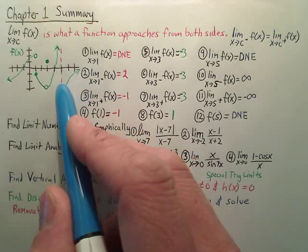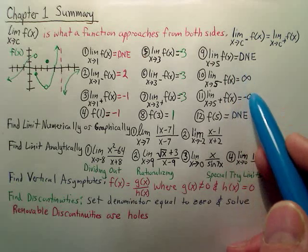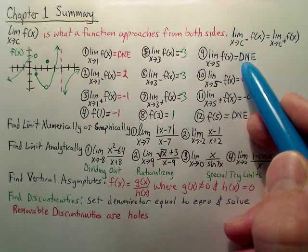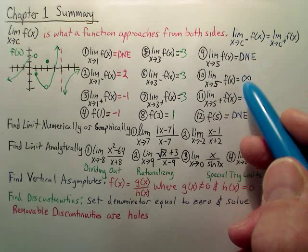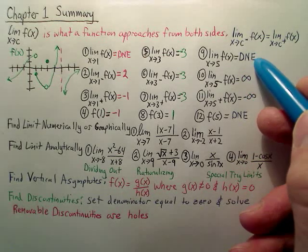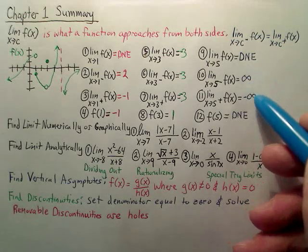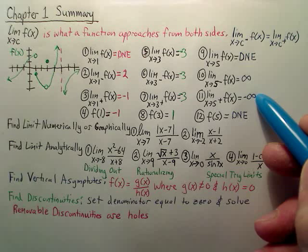From the positive side, aren't you going to negative infinity? These two do not agree, so this does not exist. Now, if these two both went to positive infinity, this would be positive infinity. If these both went to negative infinity, this would be negative infinity. But since they go opposites, it does not exist.